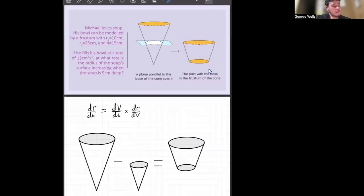We are also given the volume change over time for the soup, which is 12 centimeter cubed per second. And we want to know the rate that the radius of the soup surface is increasing when the soup is 9 centimeters deep.